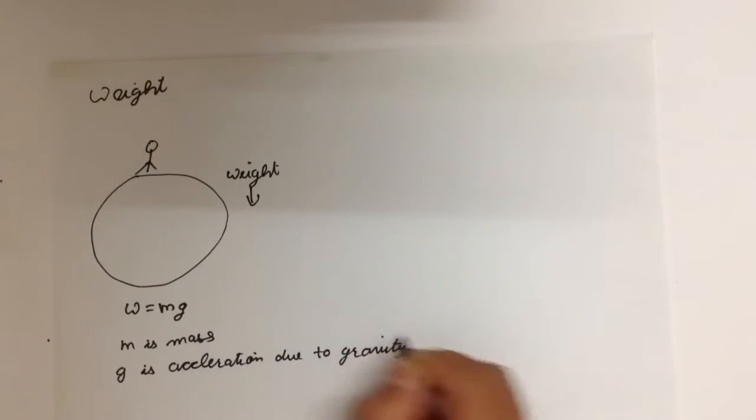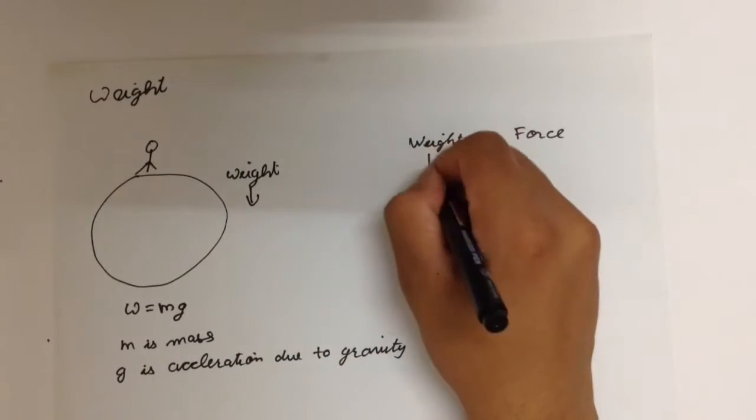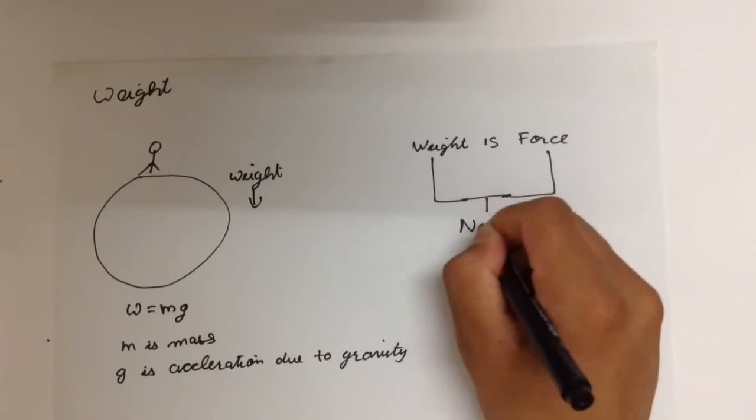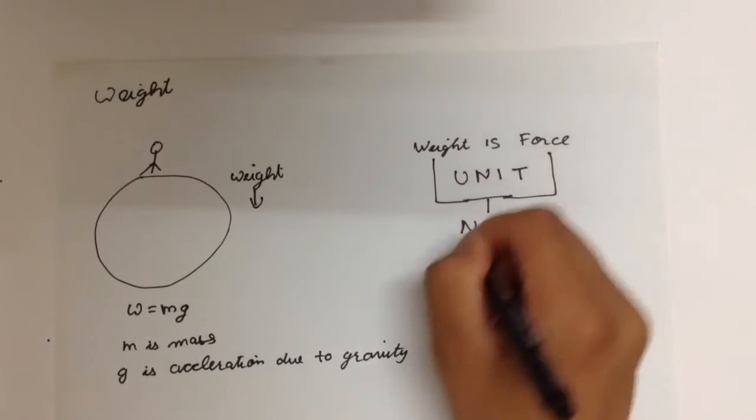Weight is a vector quantity. That is, it has both magnitude and direction. It is by definition a force and like any other force, it has the same unit, Newton.